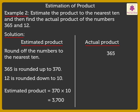So, 365 multiplied by 12 is equal to 4,380. Thus, the actual product is 4,380.